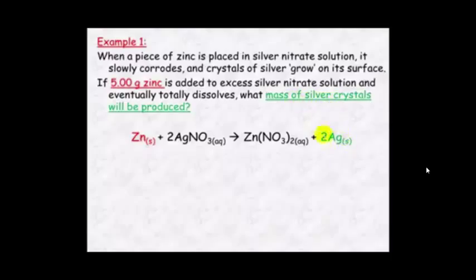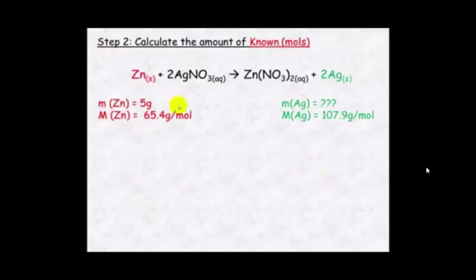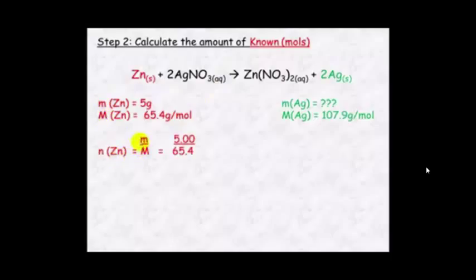The mass of silver is what we're trying to find, so this becomes your unknown. We know the mass of zinc is 5 grams, and its molar mass from the periodic table is 65.4 g/mol. We're trying to work out the mass of the unknown. Step 2: calculate the number of moles of the known — n = m/M — which equals 0.0765 mol.